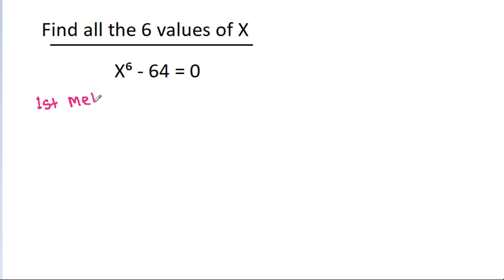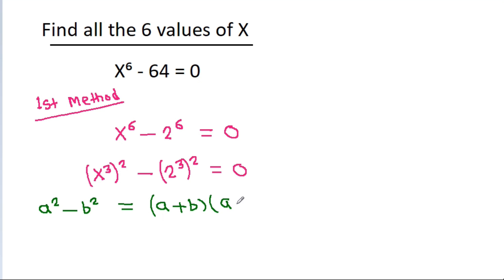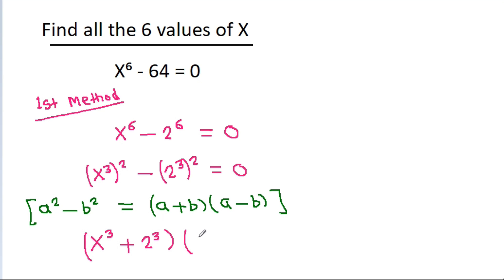The first method: we write x⁶ − 64 as x⁶ − 2⁶ = 0. Then x⁶ = (x³)² and 2⁶ = (2³)², so we have (x³)² − (2³)² = 0. Applying a² − b² = (a + b)(a − b), it becomes (x³ + 2³)(x³ − 2³) = 0.